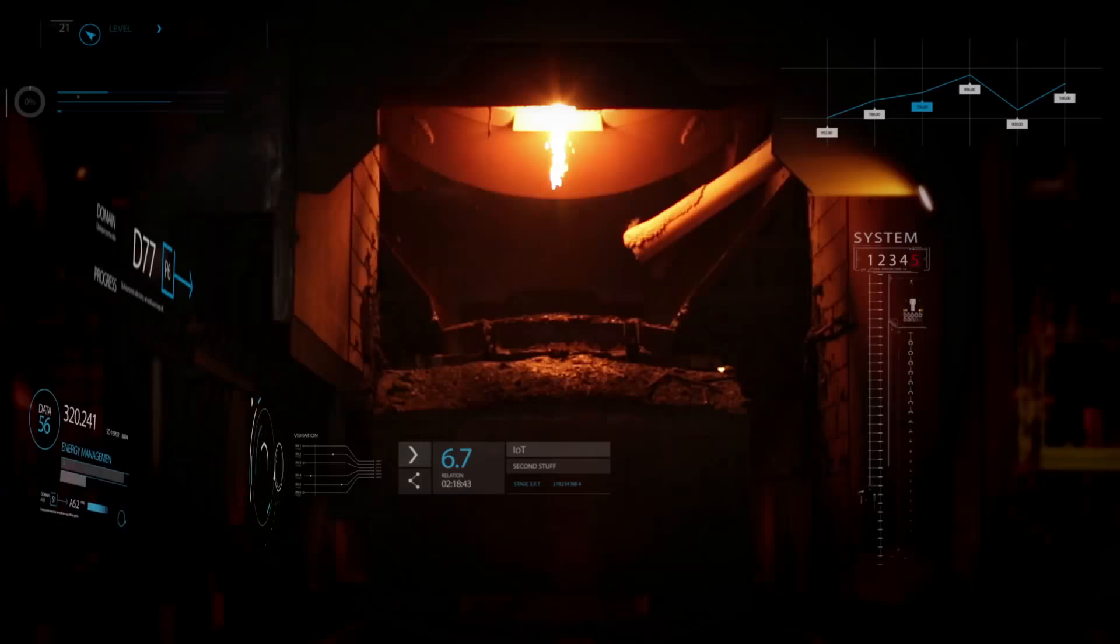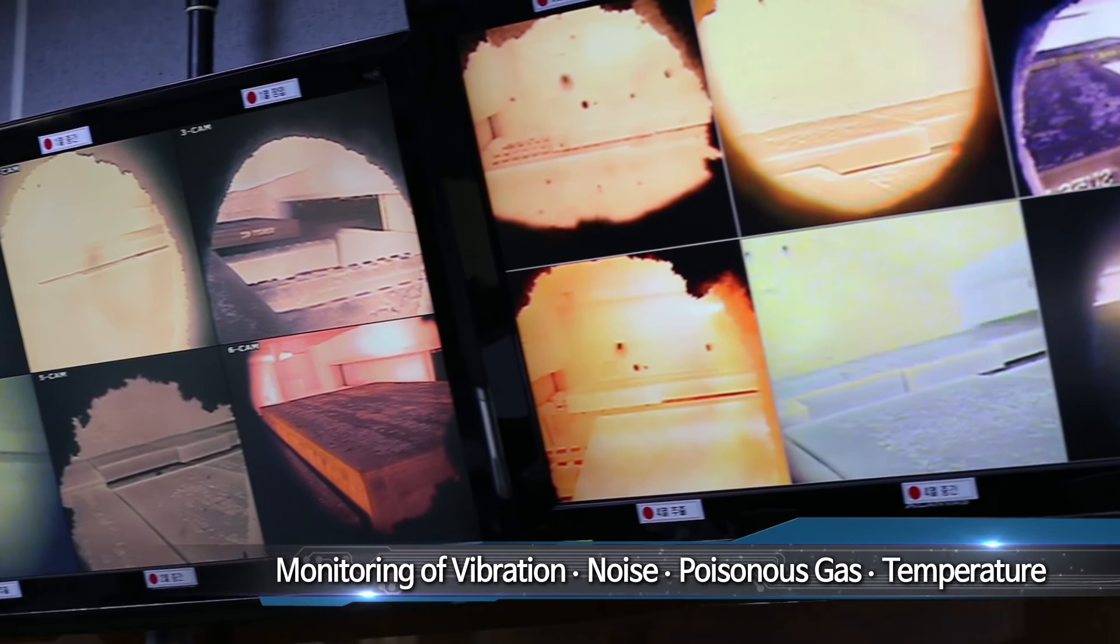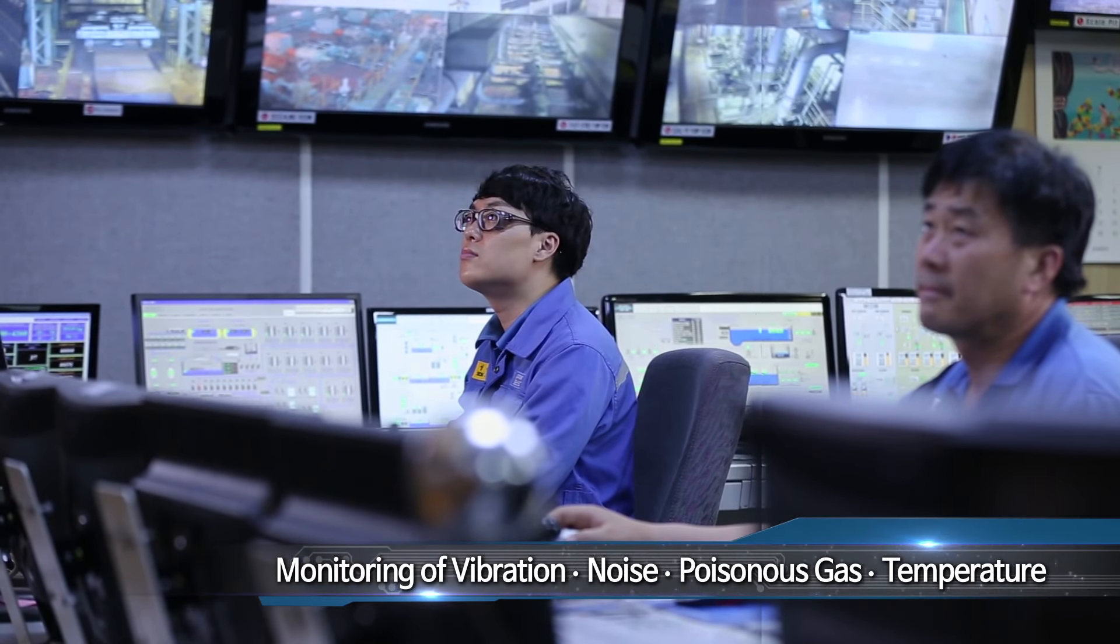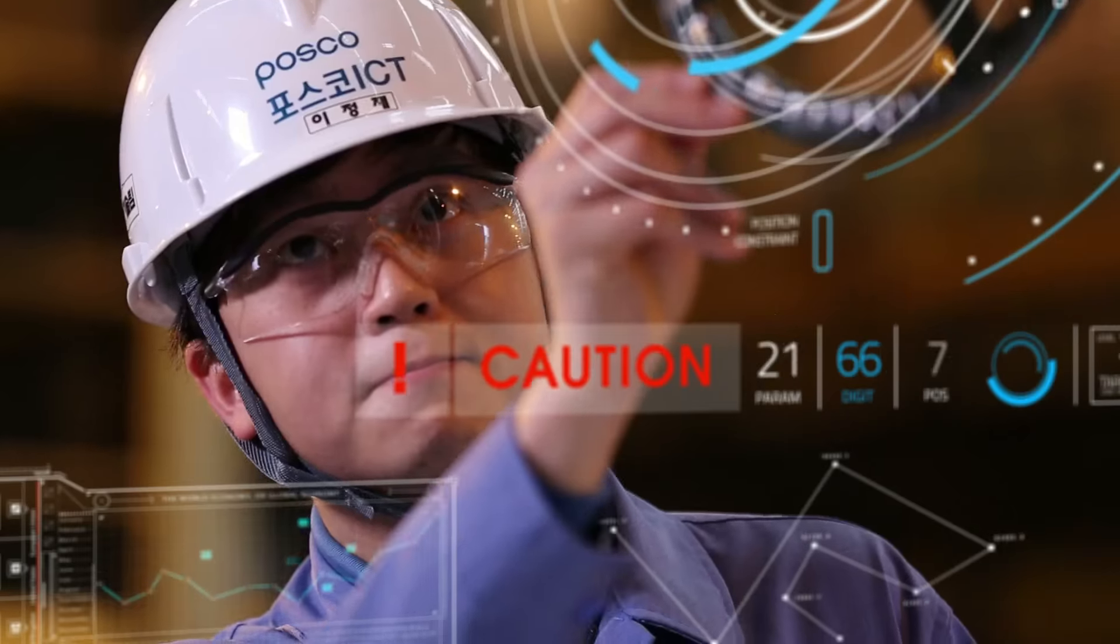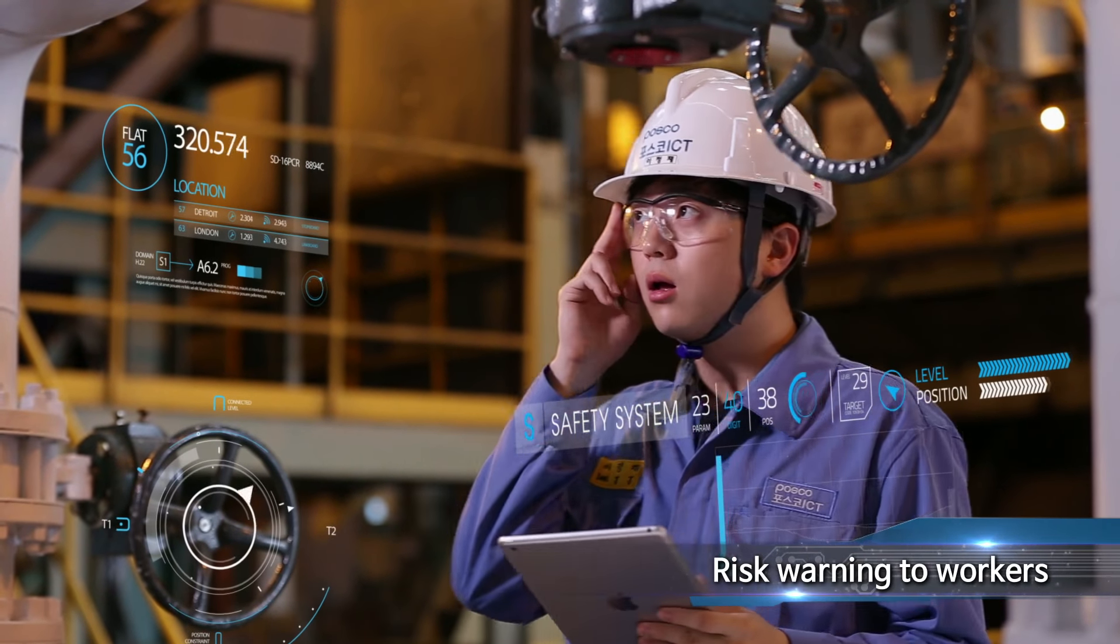Smart factory monitors the field environment such as vibration, noise, poisonous gas, and temperature of a workspace in real time and notifies workers of any risk elements in advance for providing a safe and pleasant work environment.